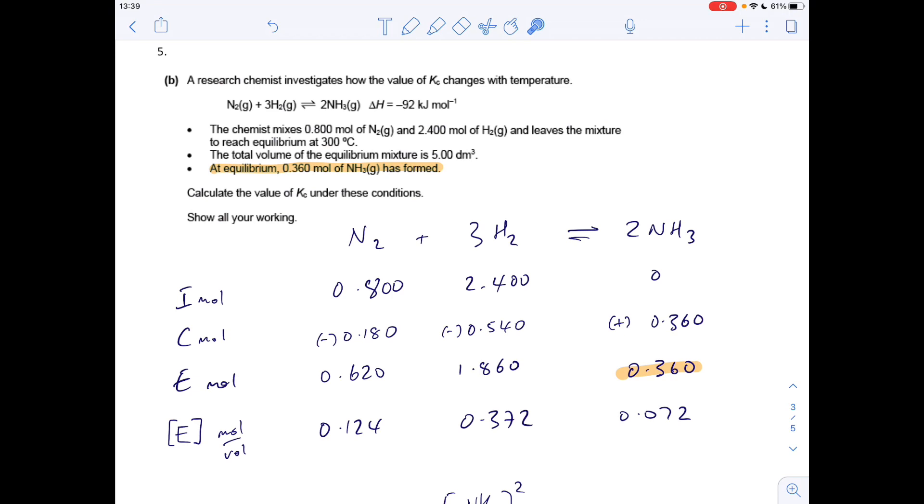Moving on to the same Haber process equilibrium, but this time it's a Kc calculation. We've got the initial moles of nitrogen and hydrogen. The volume of the equilibrium mixture is 5 dm³, and at equilibrium 0.36 moles of ammonia is formed. Same as before: initial, change, equilibrium. But with a Kc calculation you work out the equilibrium concentration - that's moles divided by the volume of 5 dm³. There's your initial moles. I'm going to jump to the 0.36 moles of ammonia formed, telling us there's an increase in moles of 0.36.